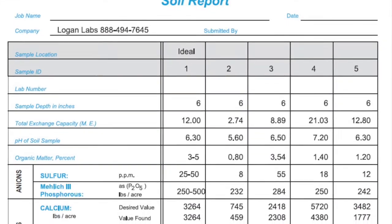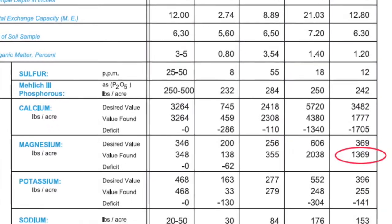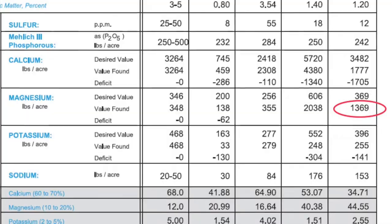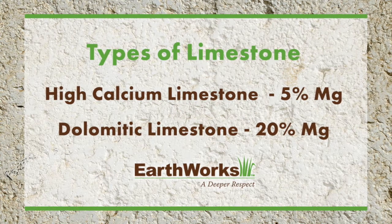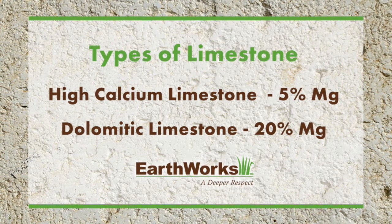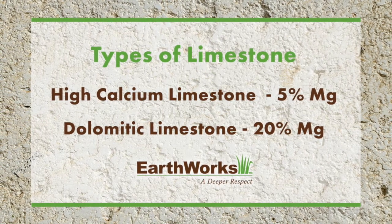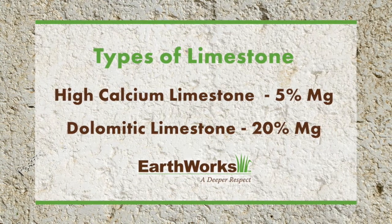Now the first thing we have to determine is what type of limestone do we want to use? In this case, as you can see on the test, we've got an awful lot of magnesium in that soil. So using high calcium limestone, which is a limestone with about 5% magnesium in it, versus using dolomitic limestone, which is about 20% magnesium, is a better choice.